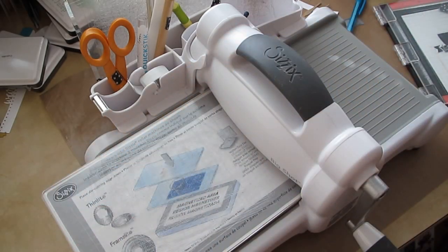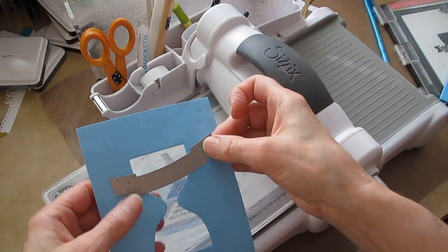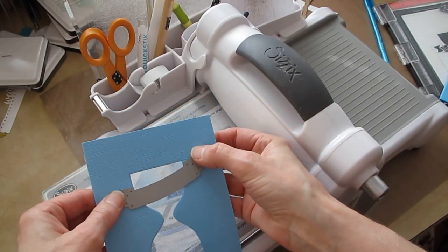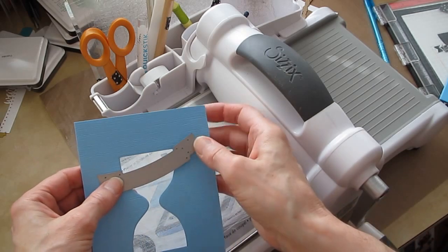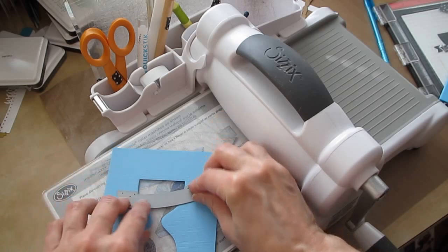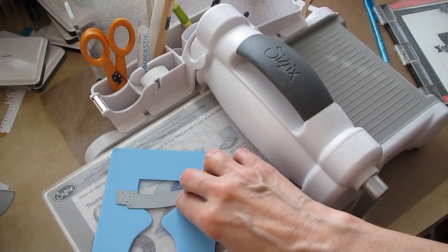Okay, so now, before I move that, I'm going to die cut this banner in the front. And I'm going to line that. See these little places right here? I'm going to line those up with the sides of the hourglass. But I need that tape again.